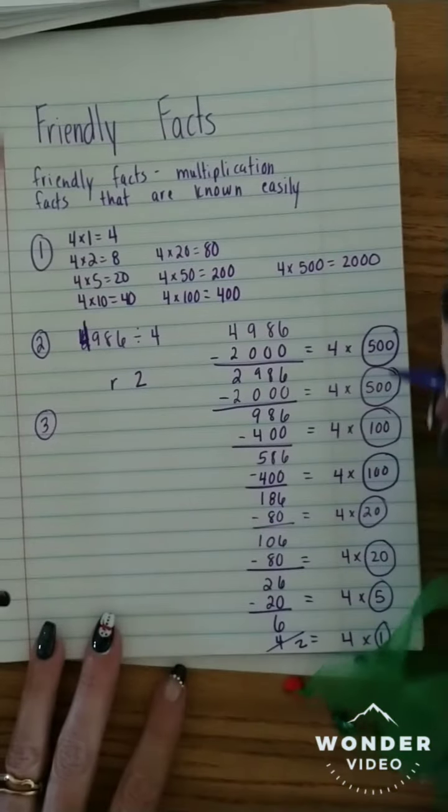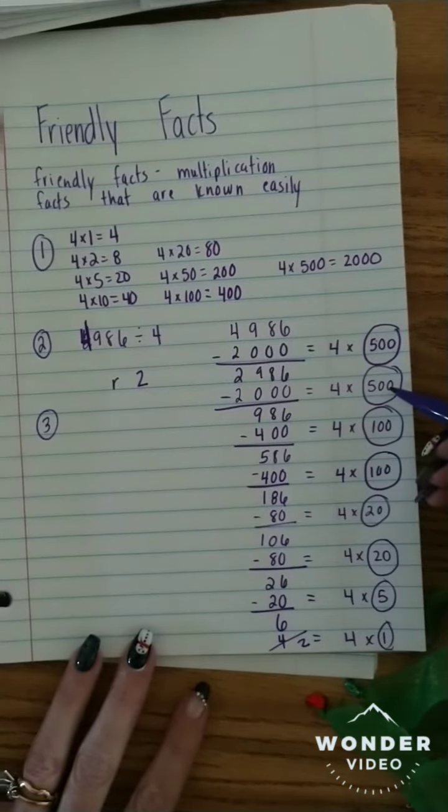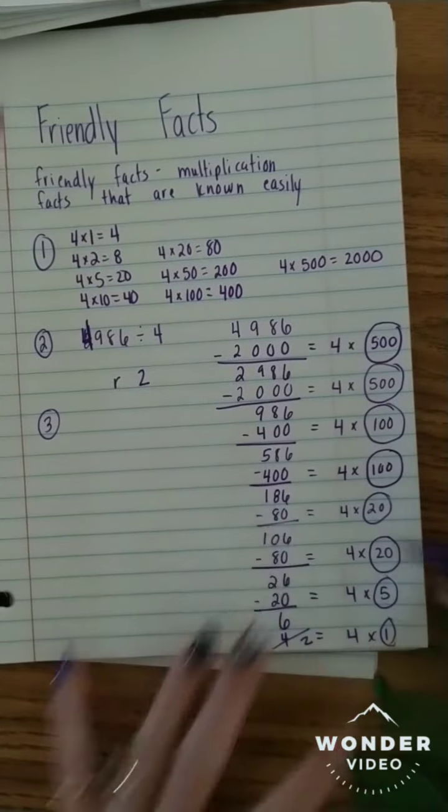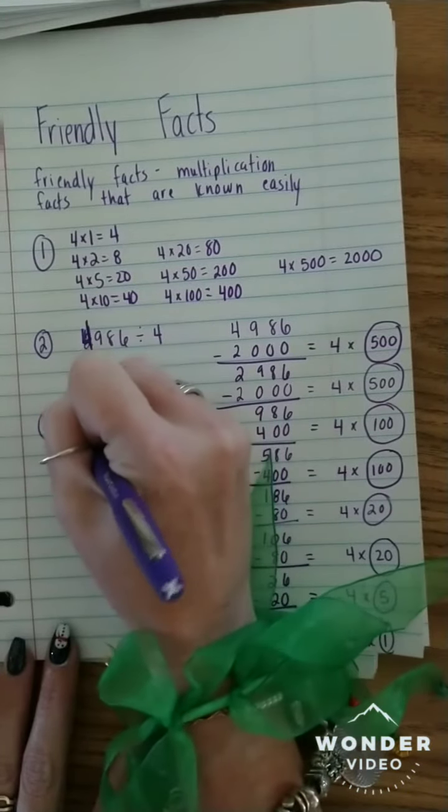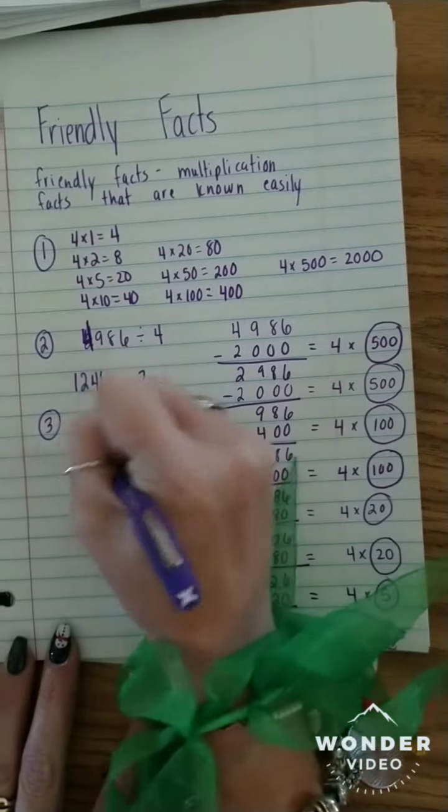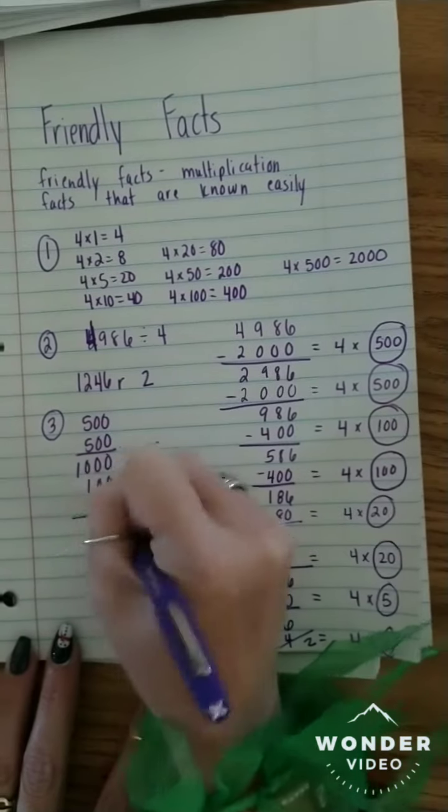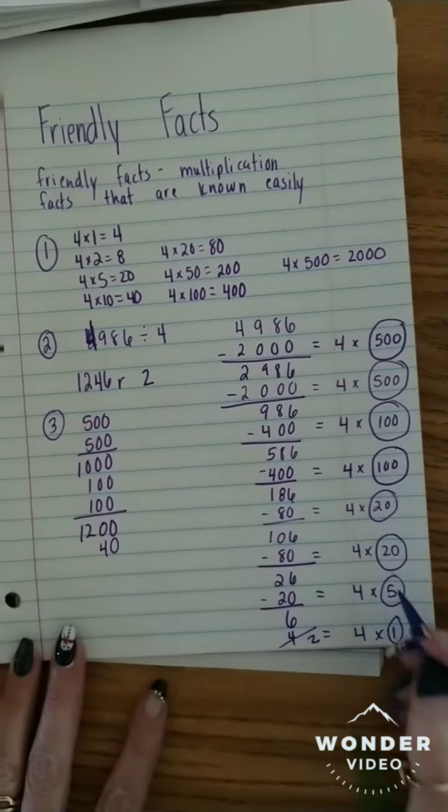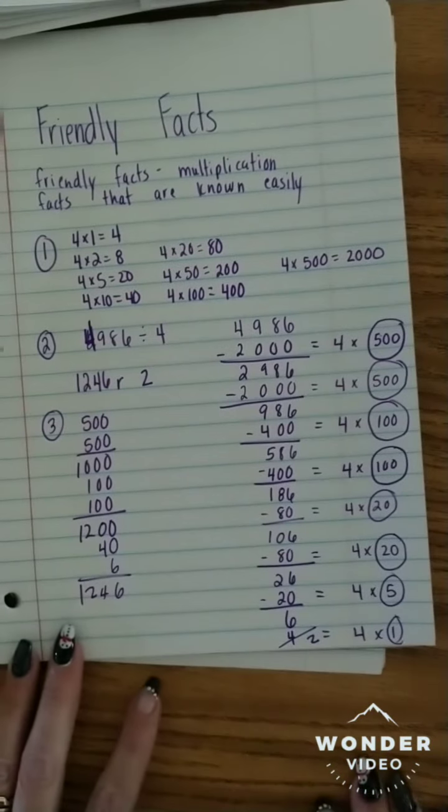Step 3 is to add all of my circled numbers, and that tells me what my quotient is. So 500 plus 500 is 1,000, 1,100, 1,200, 1,220, 1,240, 1,245, 1,246. So 1,246, and that was 500 plus 500 which equals 1,000, and then 100 plus 100 is 1,200. So we can see how I did that. And then 20 plus 20 is 40, and then 5 plus 1 is 6. So that's 6, 4, 2, 1. So that is step 3.